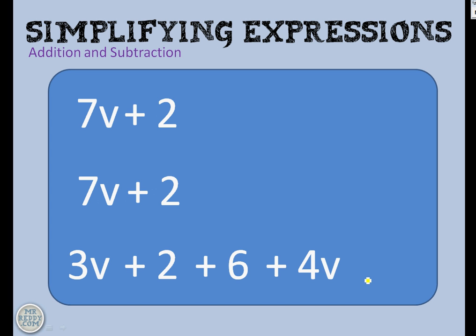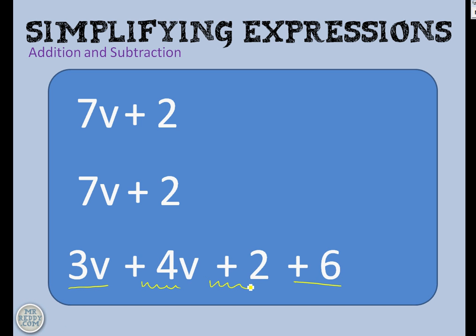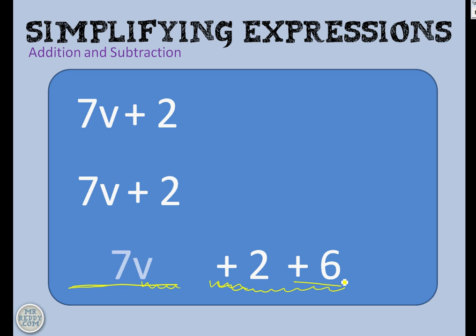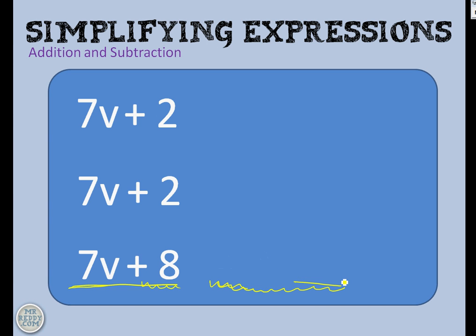Last example on this page: 3v add 2 add 6 add 4v. Here's my tip — if you've got an expression like this where you've got a jumble of terms, some that have variables and some that don't, then bring them all together. Bring the ones that have variables together and bring the constants together. So I've brought the 3v and the 4v together and kept the 2 and the 6 together. Now let's simplify each part: 3v and 4v make 7v, plus 2 plus 6 is the same as adding 8. So it simplifies to 7v plus 8.